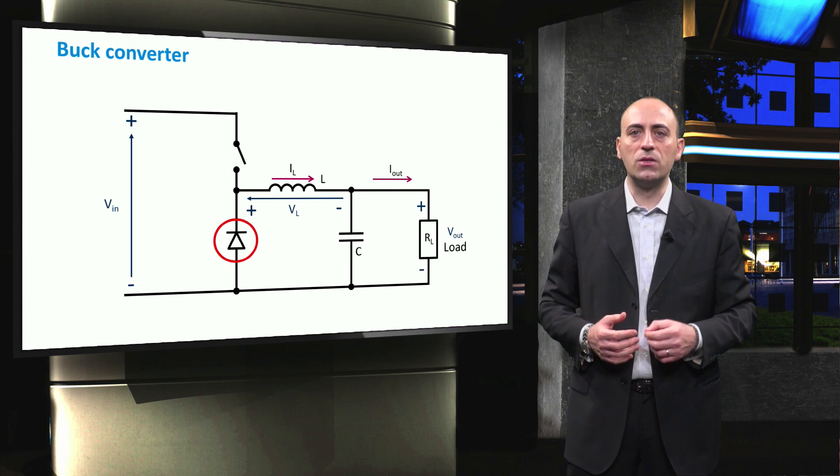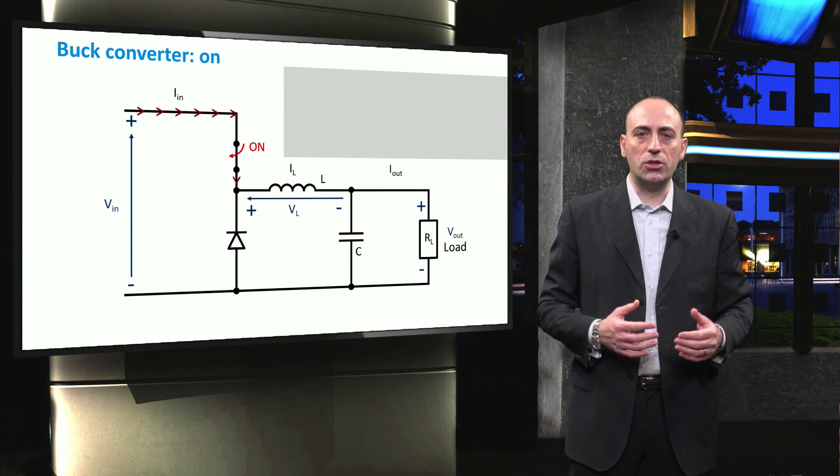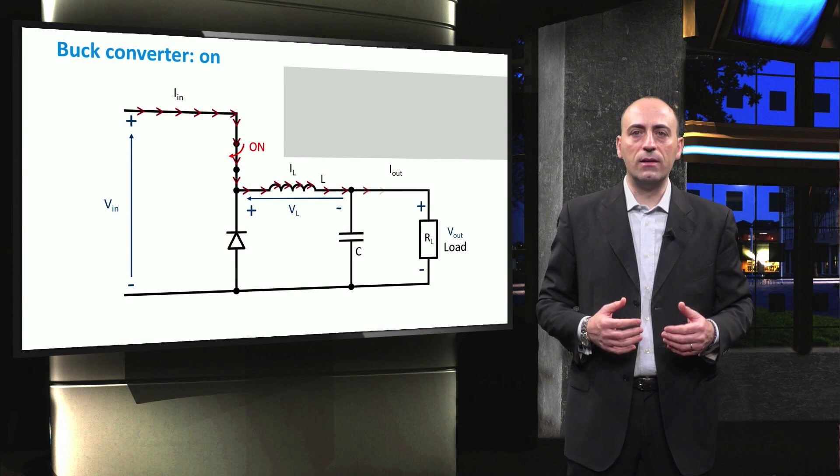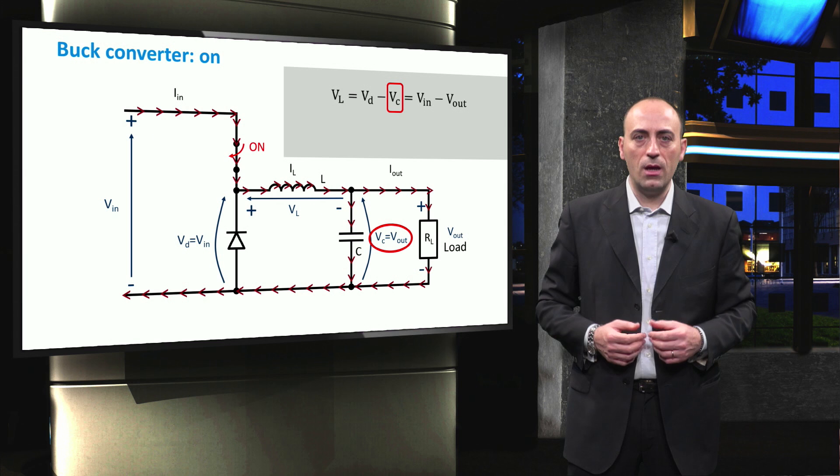Let's start with the case when the switch is on. The current flows through the switch. The inductor then divides itself among the load and the capacitor branches. By applying a Kirchhoff law for a linear circuit, we can actually find out that the voltage across the inductor is given by the voltage across the flyback diode, which is the same as the input voltage, minus the voltage across the capacitor, which in turn is equal to the output or load voltage.